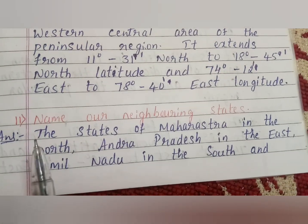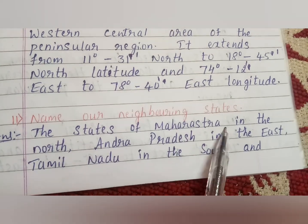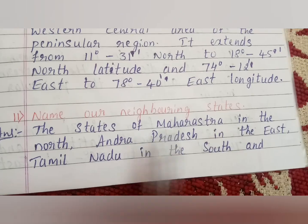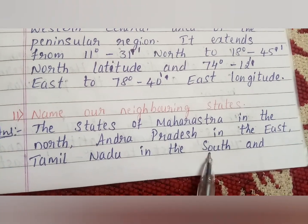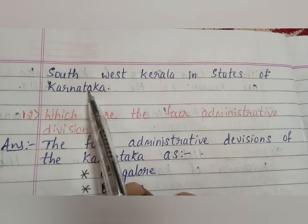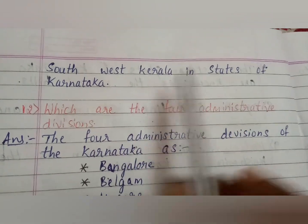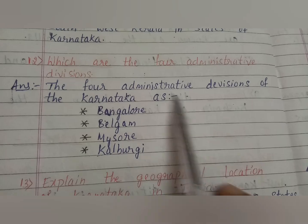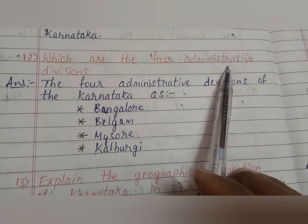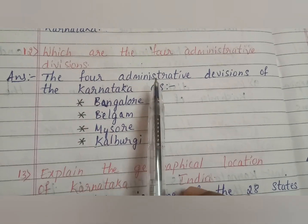Next question: name our neighboring states. Answer: the states of Maharashtra in the north, Andhra Pradesh in the east, Tamil Nadu in the south, and southwest Kerala are the neighboring states of Karnataka.